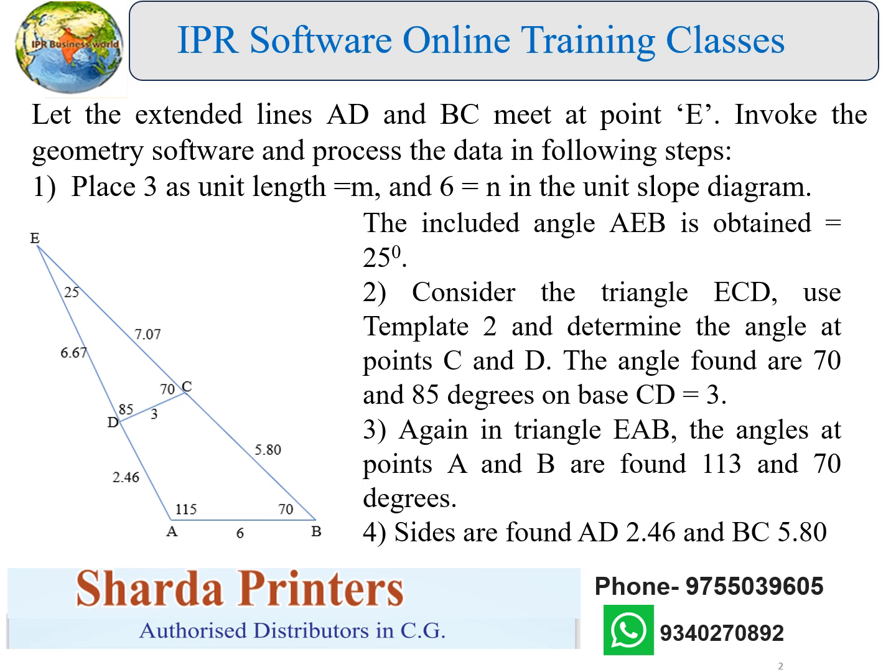The included angle AB obtained is equal to 25 degrees. Consider the triangle ECD — use the template to determine the angles at points C and D. The angles found are 70 and 85 degrees on base CD equal to 3.